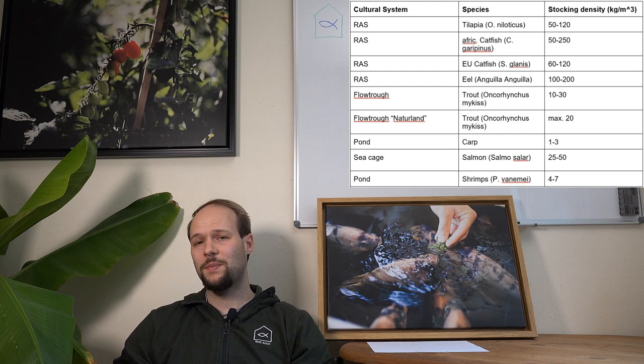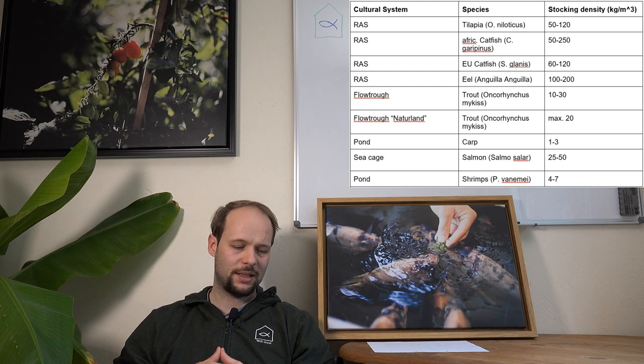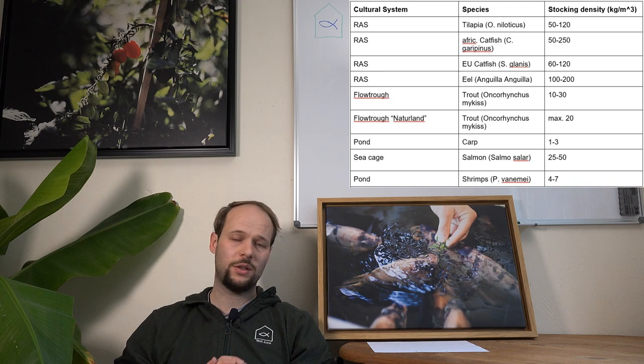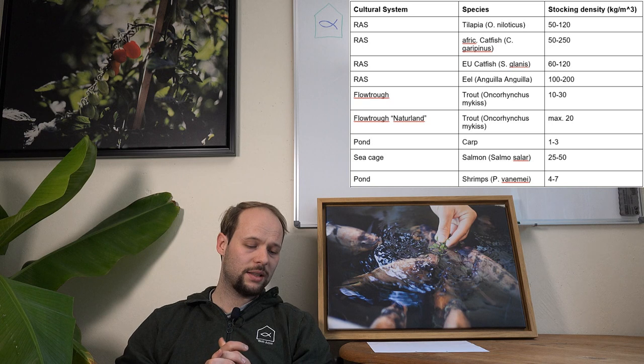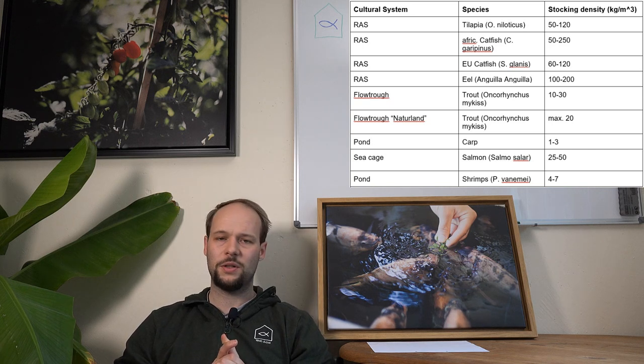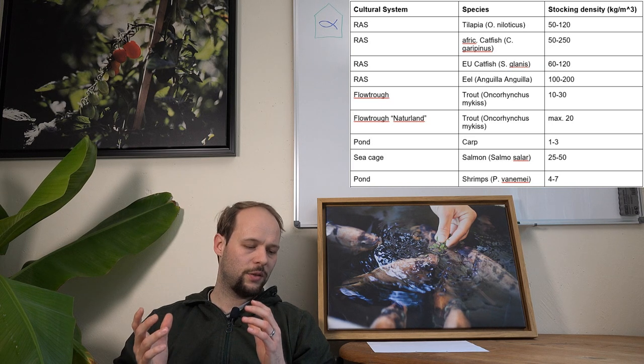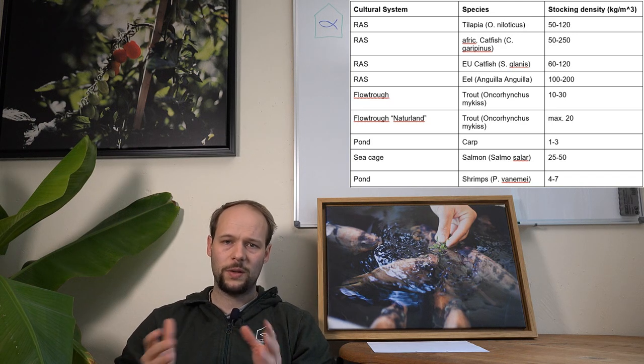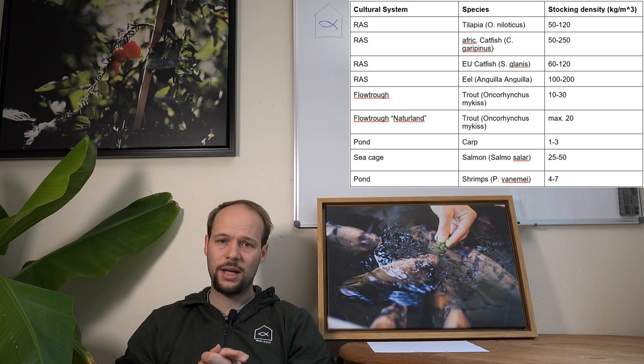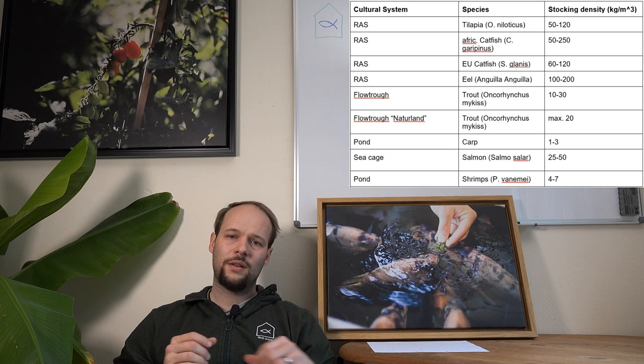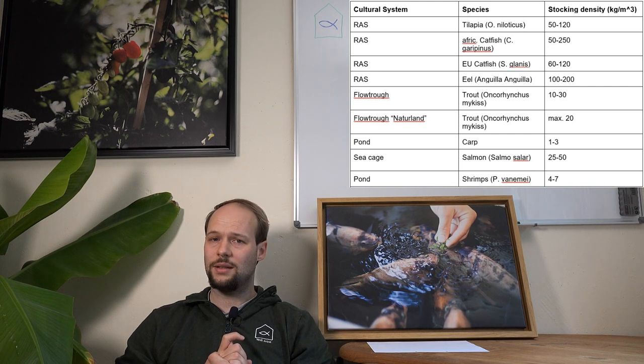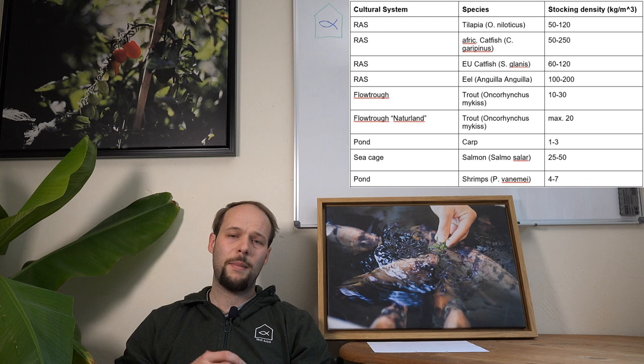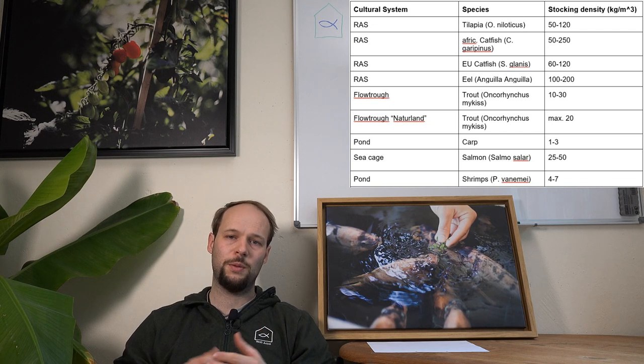But I think that is like super high intensity and I am personally not a big friend of that high densities for fish culture. Of course then you have other species like the European catfish. You also have the eel, like the European eel speaking, also pretty high density between 100 and 200 kg per cubic meter. Then you have, for example, a flow-through system for trout. Here the densities are usually between 10 and 30 kg per cubic meter. It depends on the technology that you are also applying. For example, there is another flow-through system for trout, and that is after a certain label like a NaturaLand label, which is kind of a German label for more sustainable raised products. And there the maximum density that they allow is like 20 kg per cubic meter.